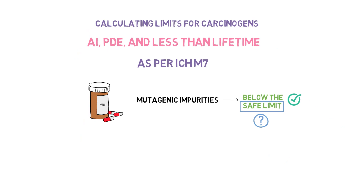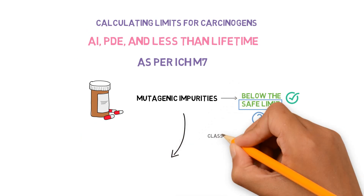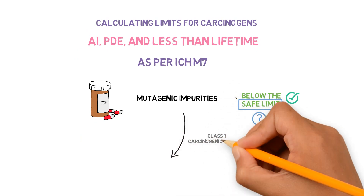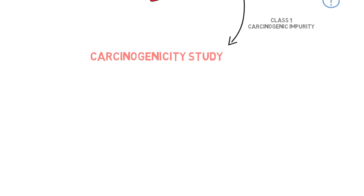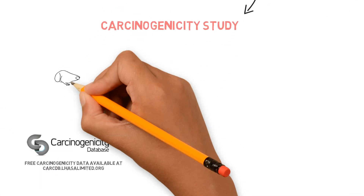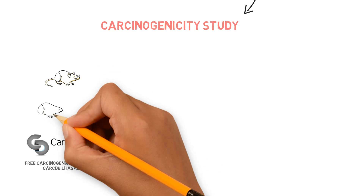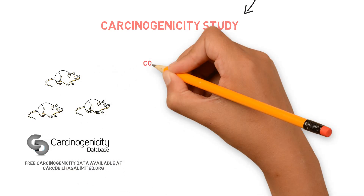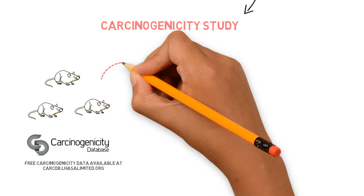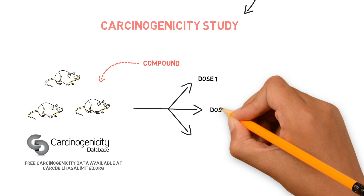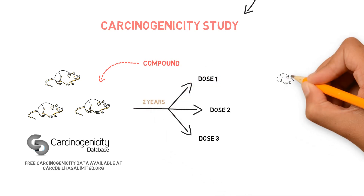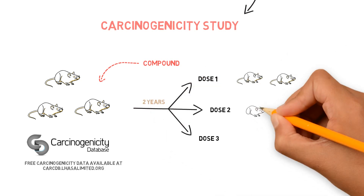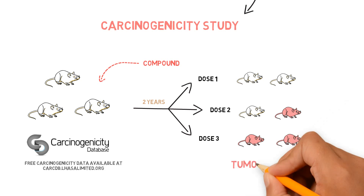When a compound is a carcinogenic compound — a class 1 impurity as per ICH M7 — it was already tested in animals in a carcinogenicity study. This is a study in which rodents are exposed to that compound at different doses, usually throughout their lifetime, which is 2 years, and we observe when tumors develop.